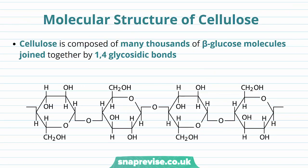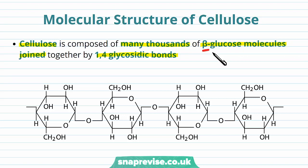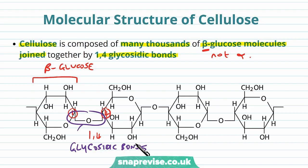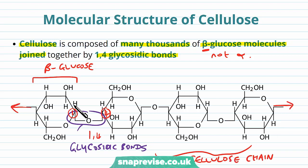To understand why cellulose is good as a structural polysaccharide, we need to understand the molecular structure. Cellulose is made up of thousands and thousands of beta-glucose isomer molecules joined together by 1,4-glycosidic bonds. In another video we talked about how starch was made up of alpha-glucose molecules — the crucial point in cellulose is that it's beta-glucose, not alpha. Each hexagonal shape represents a beta-glucose, and they're linked together by glycosidic bonds, numbered at carbon 1 of one beta-glucose and carbon 4 of the other, giving us 1,4-glycosidic bonds, forming a long cellulose chain.